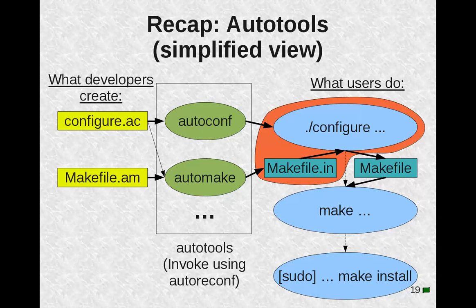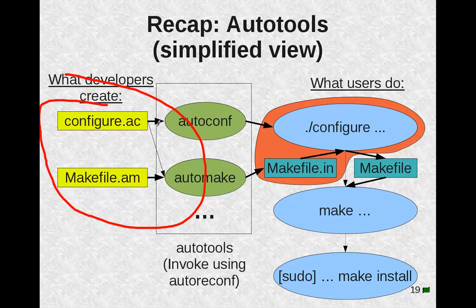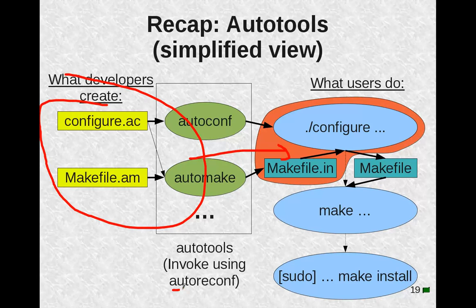In short, AutoTools lets developers create configure.ac and makefile.am files, and generate configure and Makefile files through autoconf, automake, and so on, and use autoreconf to invoke all the right tools in the right order.